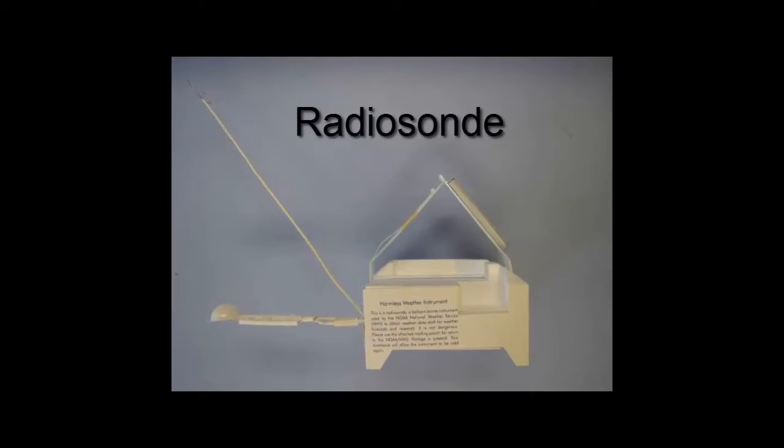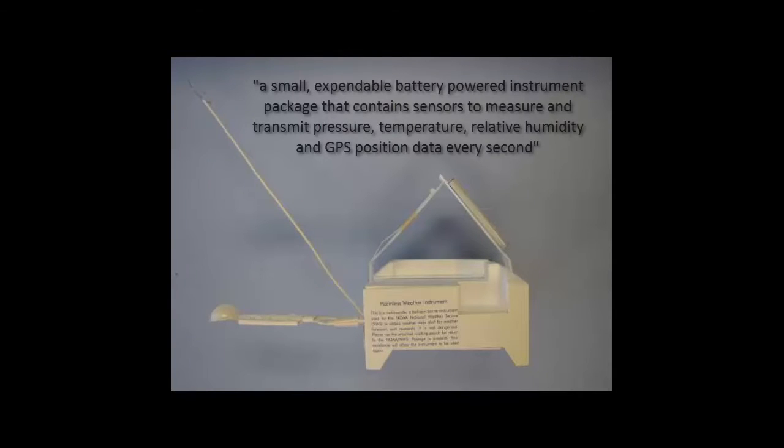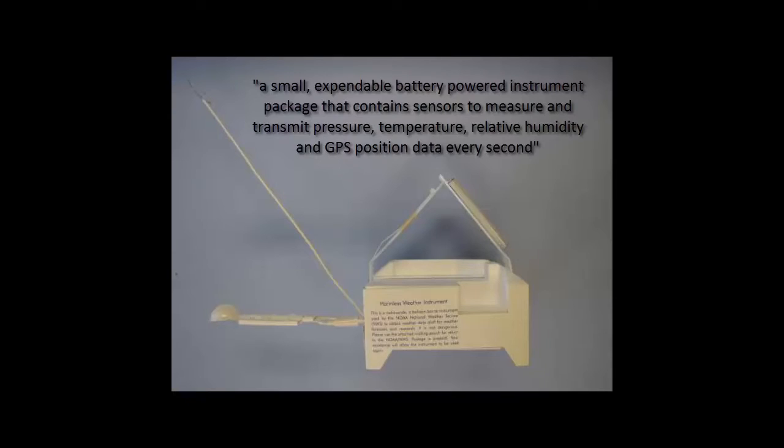This device here is called a radiosonde. As defined by the National Oceanic and Atmospheric Administration or NOAA, a radiosonde is a small expendable battery-powered instrument package that contains sensors to measure and transmit pressure, temperature, relative humidity, and GPS position data every second.